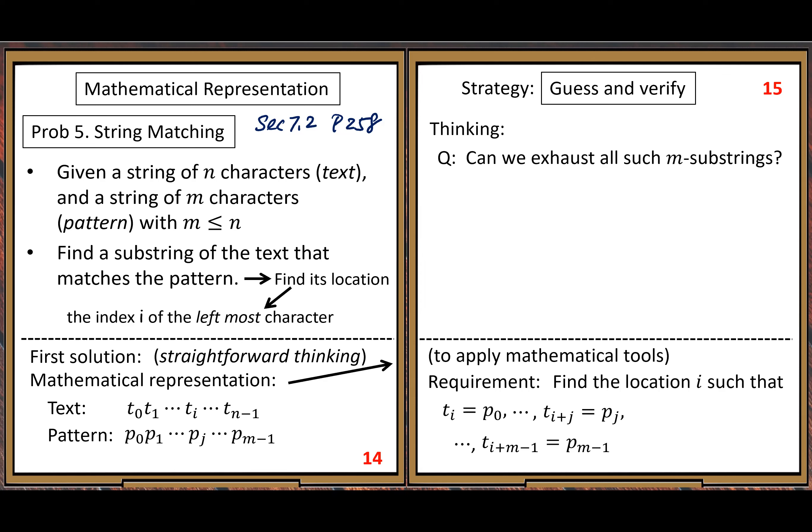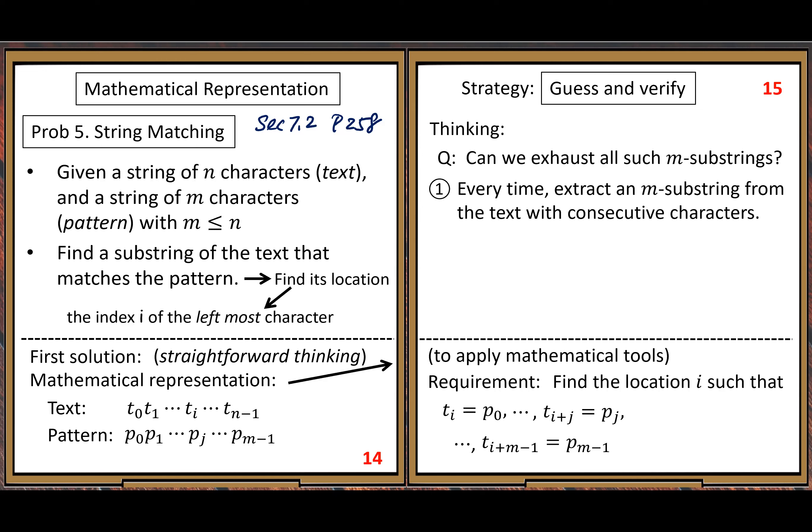The first thing we want to do is count the number of m-substrings in a given text. It's a simple question, but we need to give an exact number as the answer. Every time we extract an m-substring from the text with consecutive characters.